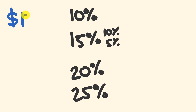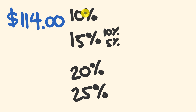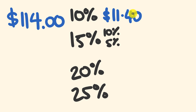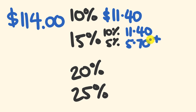Let's try a bigger example: $114. For 10%, we divide by 10 — move the decimal one place — and get $11.40. For 15%, we take that $11.40, halve it to get $5.70, then add the two together: $11.40 plus $5.70 equals $17.10.